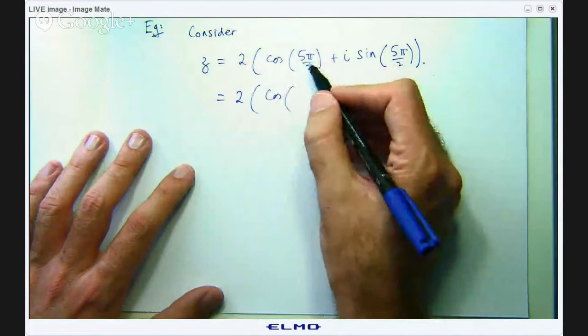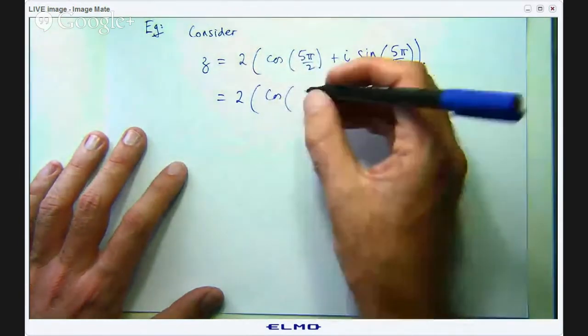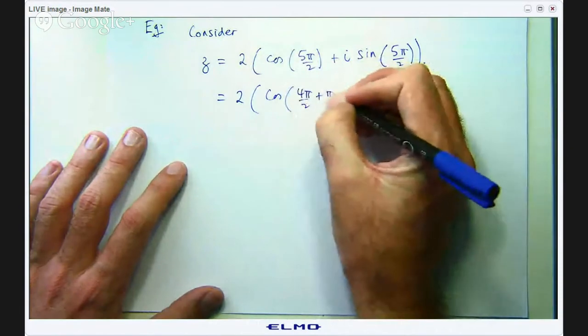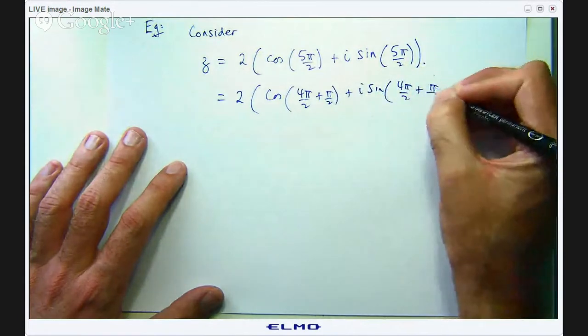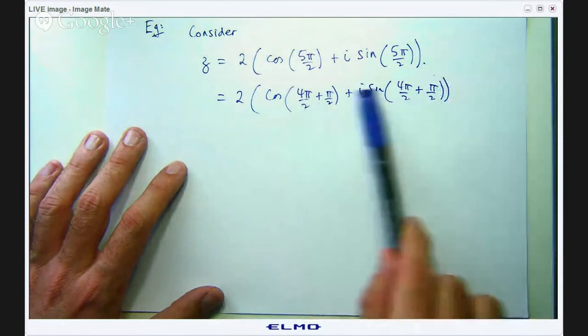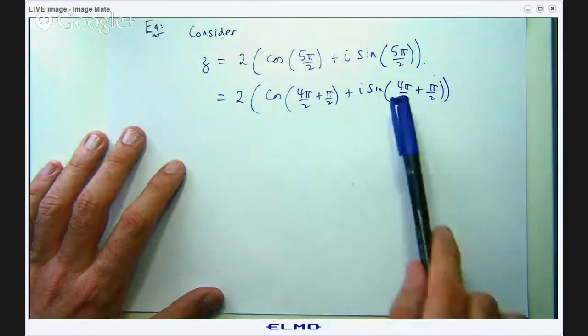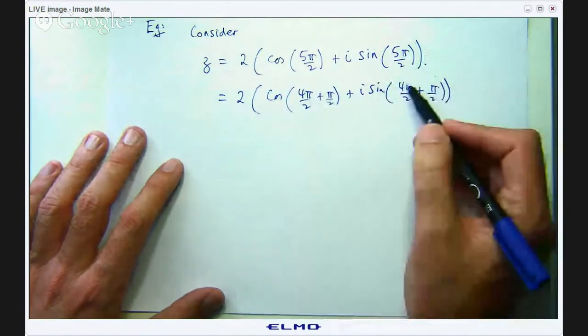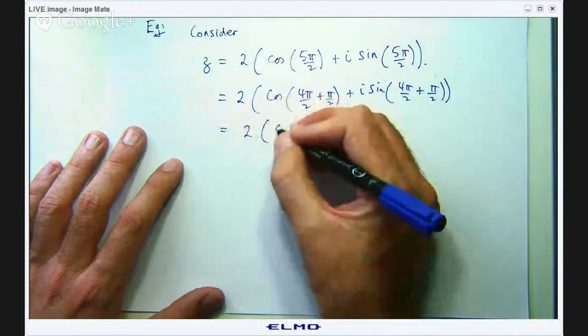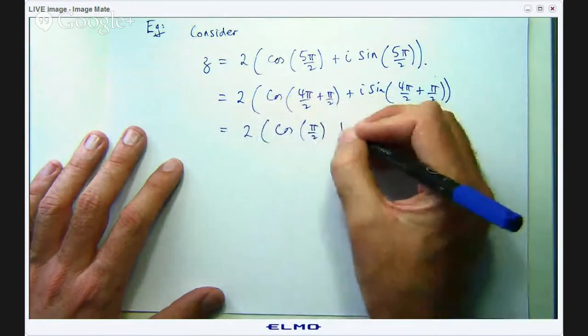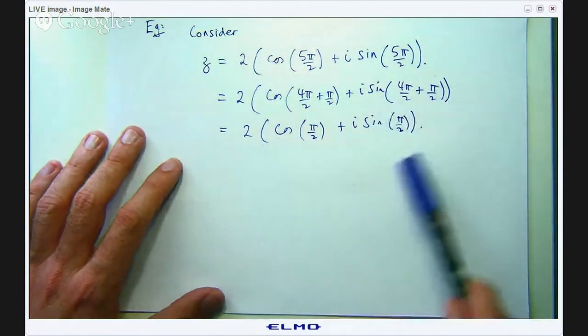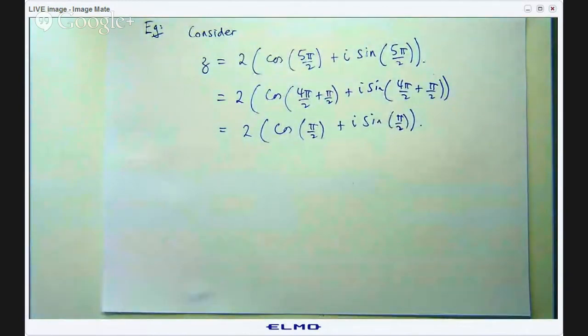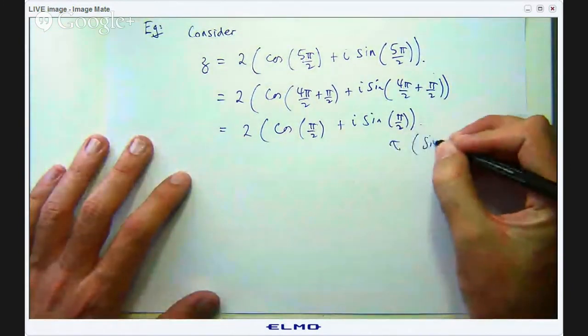I can actually do this and write it in the following way. 5π on 2, if I take π on 2 out of there I am left with 4π on 2 plus π on 2, which equals 2 times cos of 2π plus π/2 plus i sin of 2π plus π/2. Now 4π on 2 is just 2π so we know that cos and sin are both periodic with period 2π so this will disappear and this will disappear. So I will get 2 times cos π/2 plus i sin π/2. So now this is written in the simplified polar trig form.